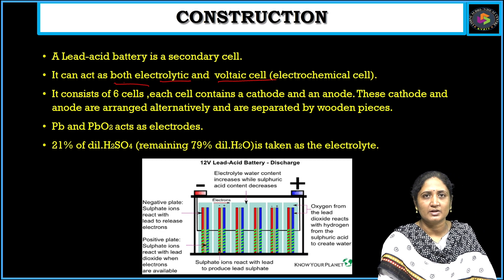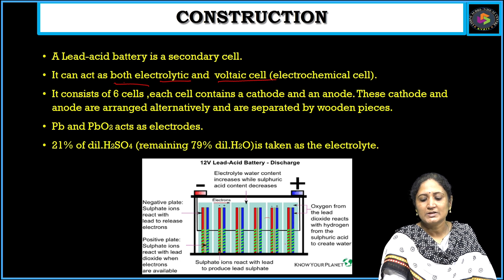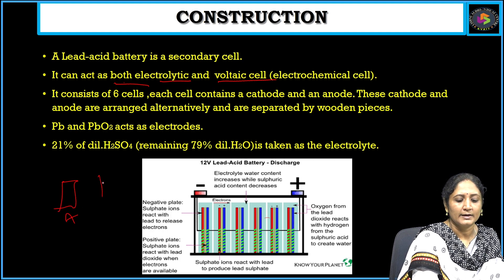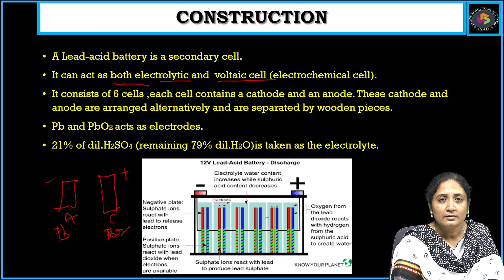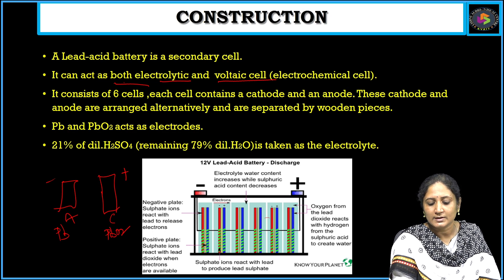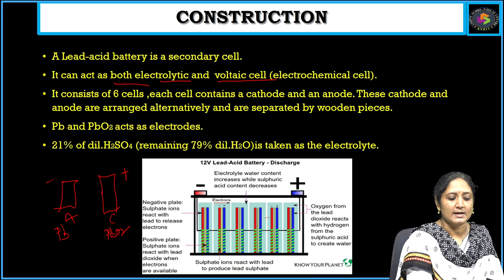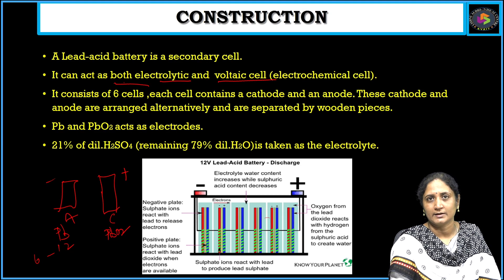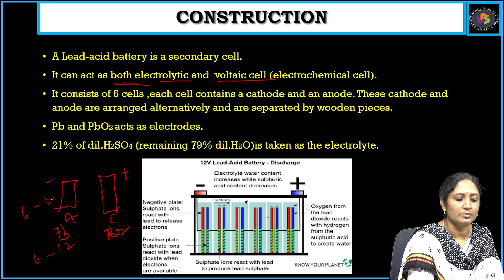Come to the construction of this battery. If you observe the diagram, it consists of six cells which are alternately arranged. Each cell consists of an anode and a cathode. Anode is represented with negative and cathode with positive. So 12 electrodes are alternatively arranged — six cells with 12 electrodes, each cell consisting of 2 electrodes.